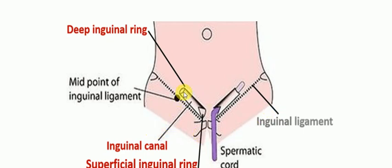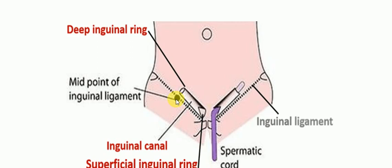This is the deep inguinal ring and this is the superficial inguinal ring, and this is the inguinal ligament. So this canal lies just parallel to and immediately above the inguinal ligament. The deep ring lies just above the midpoint of the inguinal ligament.